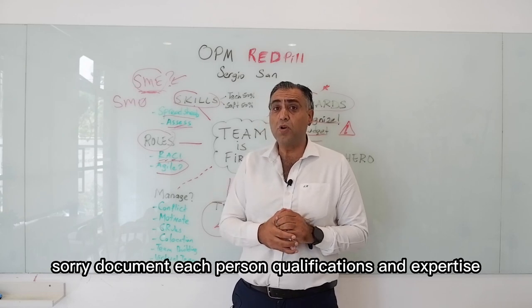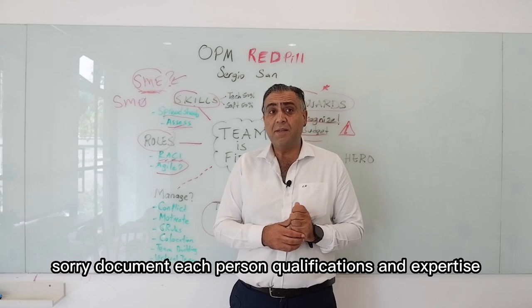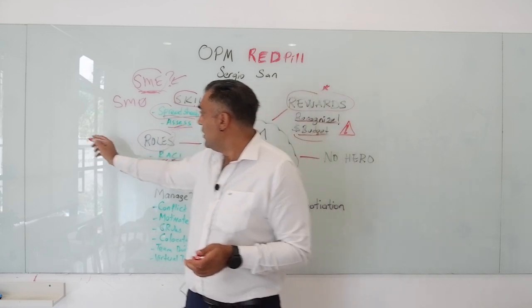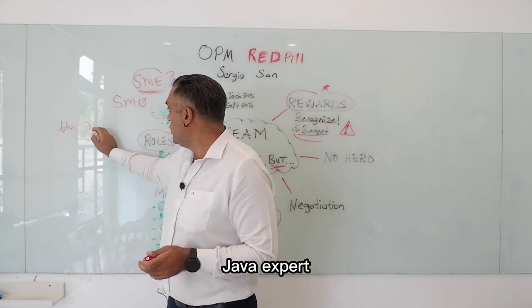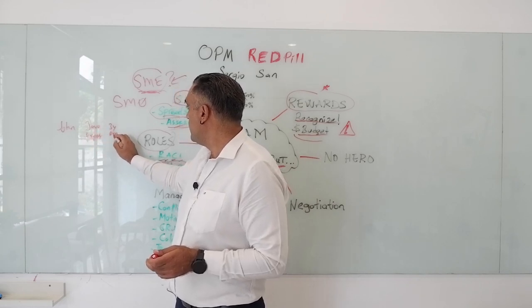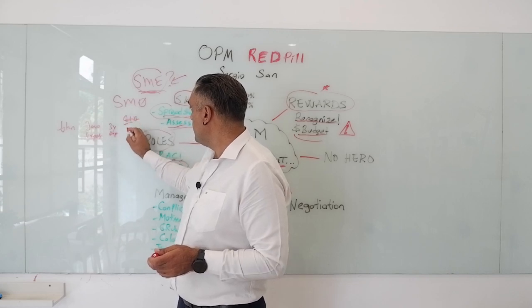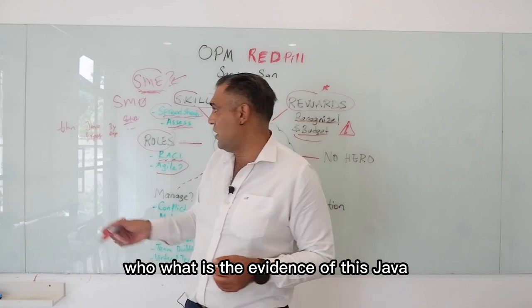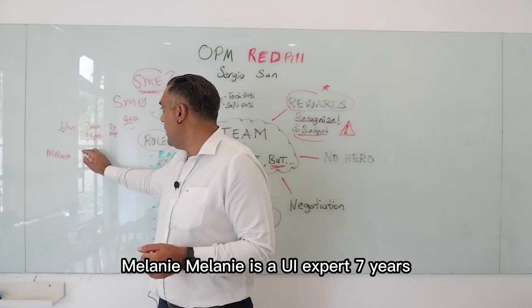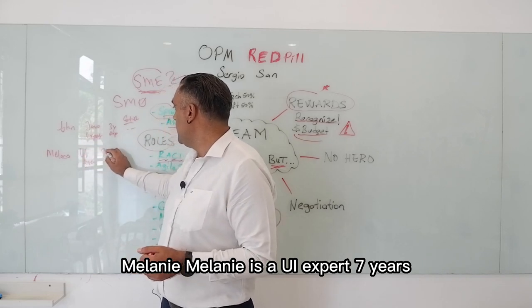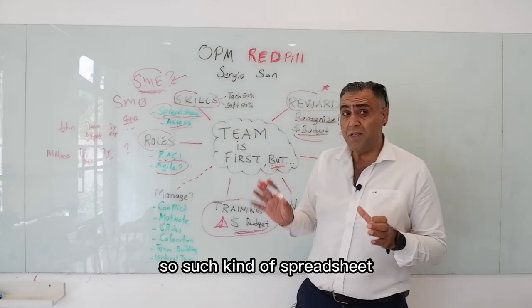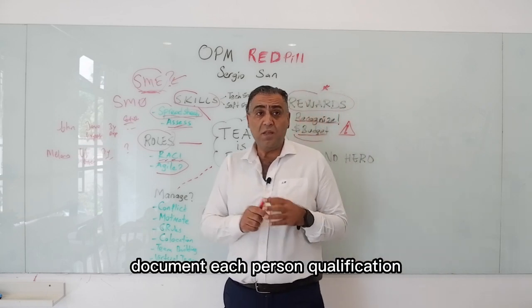Document each person's qualifications and expertise level. Make spreadsheets — for example: John, Java expert, three years experience, certifications. What is the evidence of his Java skills? Melanie is a UI expert, seven years experience, what certifications does she have? Please prepare this kind of spreadsheet and document each person's qualifications.